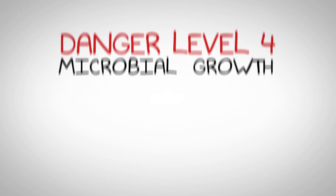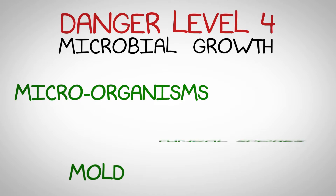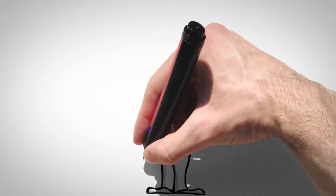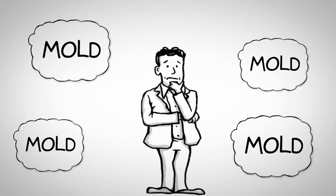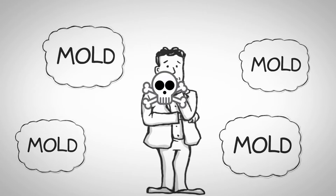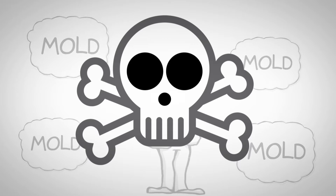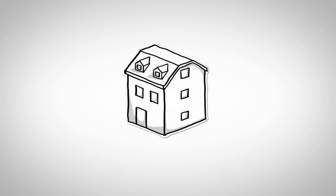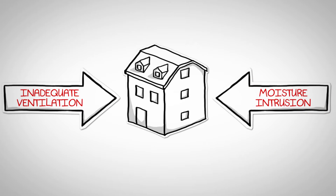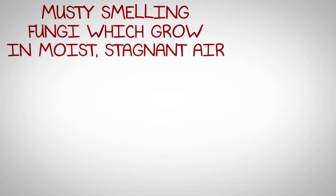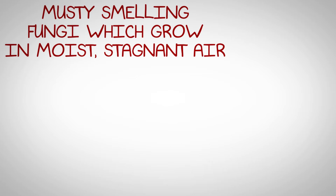Danger level four contaminants are microbial growth — microorganisms, mold, and fungal spores. You will always have naturally occurring mold; it's everywhere. But when mold is in abundance in areas it shouldn't be, it can reach toxic levels and become a health hazard. Most elevated levels of mold are due to two things: inadequate ventilation in unfinished areas of the home and moisture intrusion. Mold and mildew are musty smelling fungi which grow in air that is moist and stagnant.